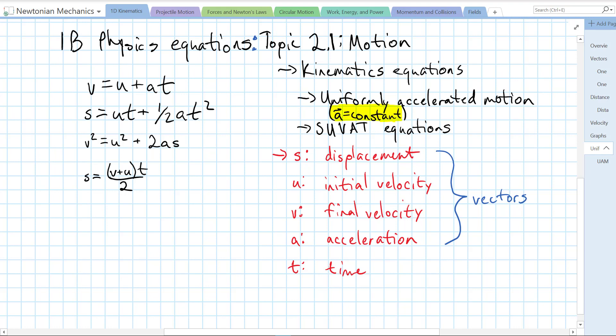There are four equations and each one has four of our different five motion variables. Our motion variables are S, which is displacement, units of meters. U stands for initial velocity, units of meters per second.